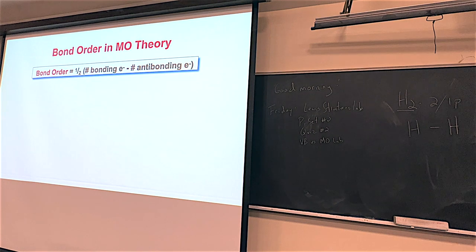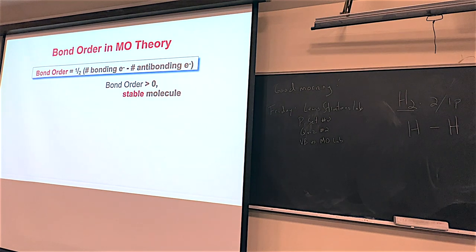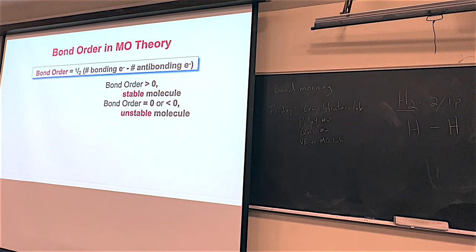Let's extend MO a little bit more and talk about bond order for molecular orbital theory. In a Lewis structure, bond order is literally the number of lines between the two atoms. The molecular orbital theory description of bond order is a little different: it's one-half times (bonding electrons minus antibonding electrons). If you have a bond order greater than zero, we're going to consider that molecule to exist — it's going to be stable. And 0.5 is actually going to be a possibility for some of these molecules.